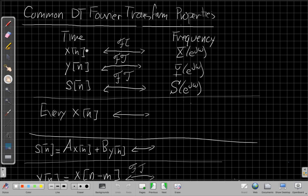Assuming we're going to start with three signals: x of n has Fourier transform X of e to the j omega, y of n goes to Y of e to the j omega, and in a few cases we'll need a third signal, s of n, that goes to S of e to the j omega.